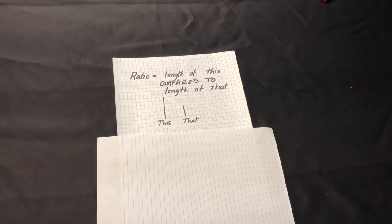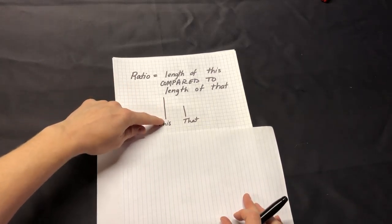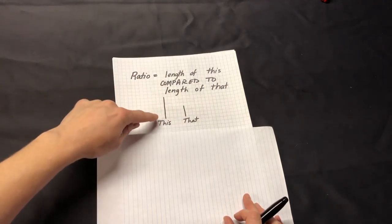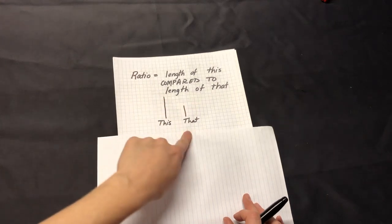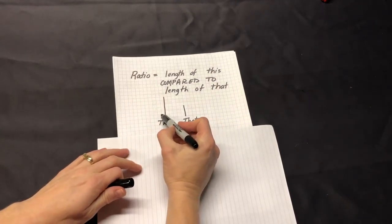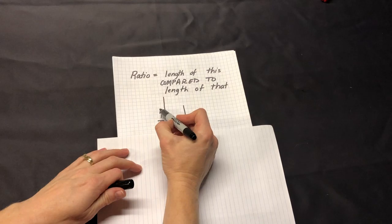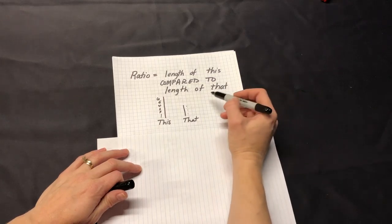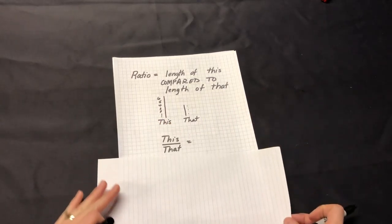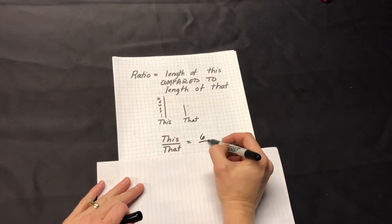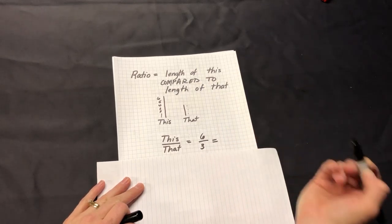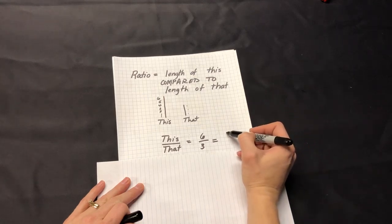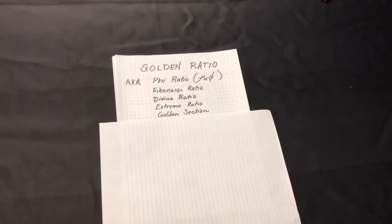Before we can really talk about what the golden ratio is, we first have to review what a ratio is. A ratio is really the length of one line compared to the other line. In this case we're comparing this line to that line. This line is six boxes tall, that line is three boxes tall. So we create a fraction: this over that — six over three — which equals two when you compute it. So that was ratios.